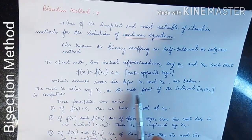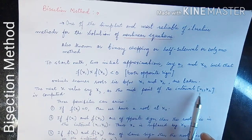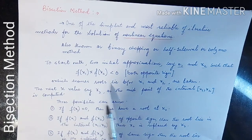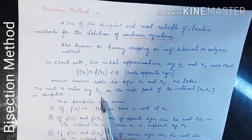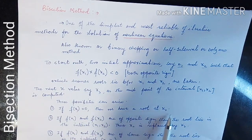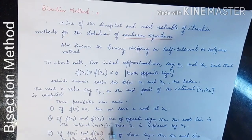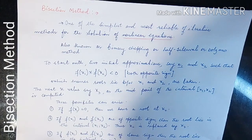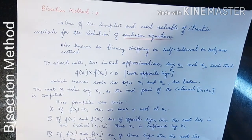The next x value, x3, is considered as the midpoint of x1 and x2. After computing x3, there are three possibilities: if f(x3) equals zero, the root lies at x3. If f(x1) and f(x3) are of opposite sign, the root lies in the interval x1 to x3 and x2 is replaced by x3. If f(x1) and f(x3) are of the same sign, x1 is replaced by x3.